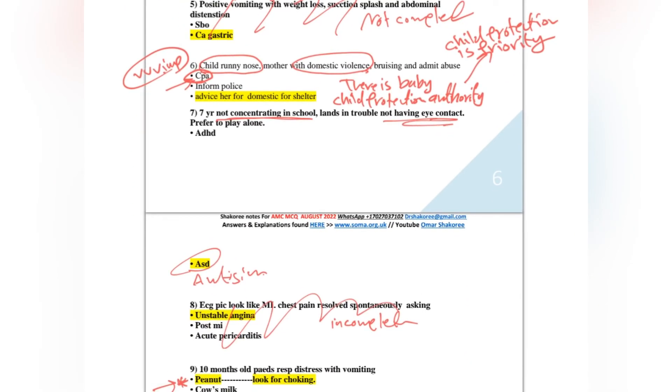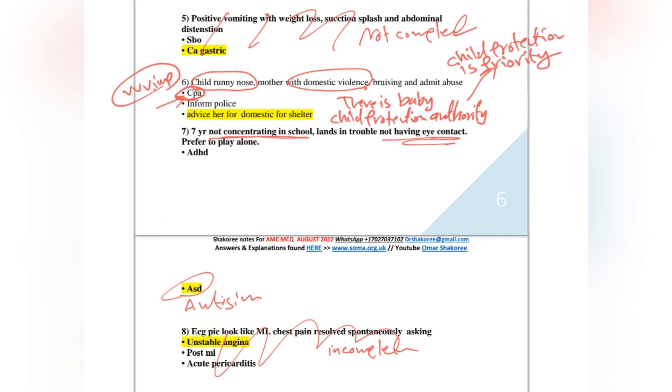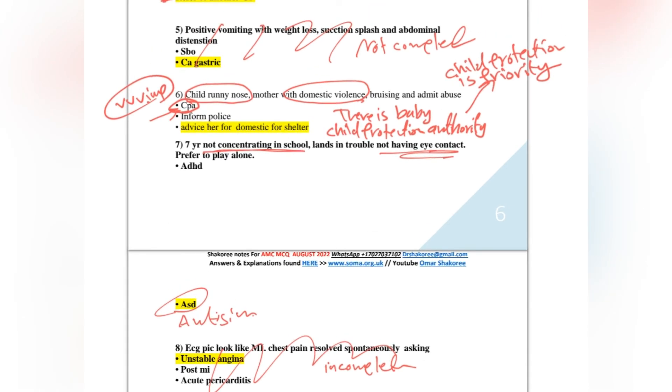Now, child with runny nose and mother with domestic violence, bruising, and admits abuse. So what to do? Look, the priority in Australia is for a child. The priority is to protect the child. Here we have domestic violence, so this house is not safe for the child. Still, here the mother has the domestic violence, not the child.